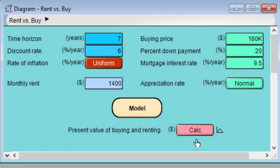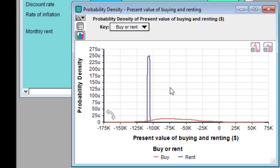Those are in percent per year units. So the rate of inflation is between 3% per year and 4% per year. Now we'll recompute the result for present value of buying versus renting. And again, we have two curves.